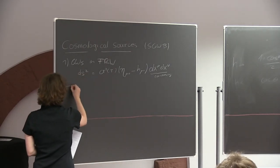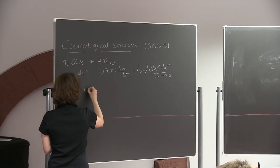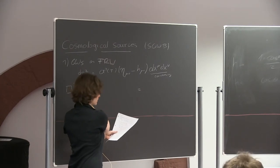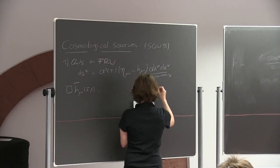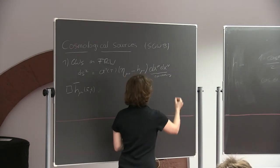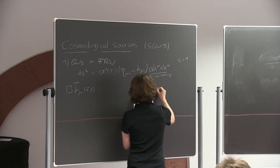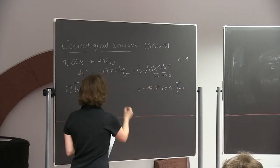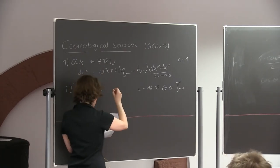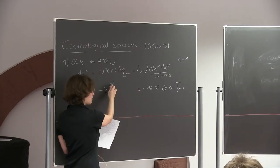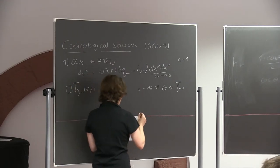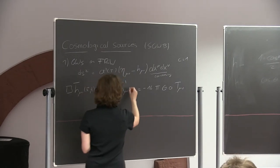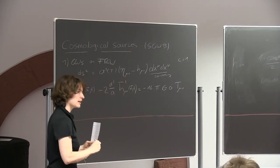In particular, the gravitational wave equation for H̄_μν in real space normally just has the box operator. Now in cosmology we set c=1. There's one new term that comes from the time-dependence of the scale factor, which is a'/a times H̄'_μν, where primes are derivatives with respect to conformal time. The equation looks exactly the same, just with one new term.